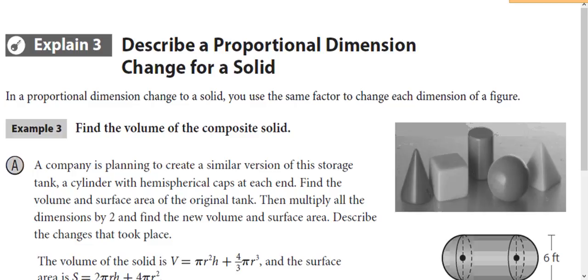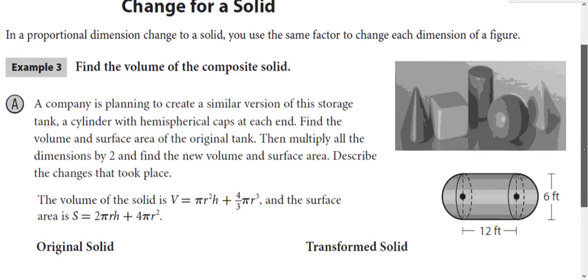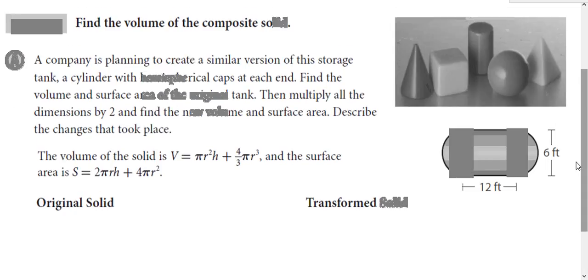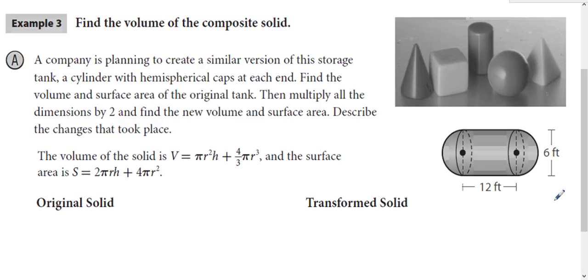You can apply that same concept to volume as well. Here we have a storage tank, which is a cylinder with hemispherical caps. We'll find the volume of the original tank, then multiply all the dimensions by 2. The diameter is 6 so the radius is 3, and the height is 12.